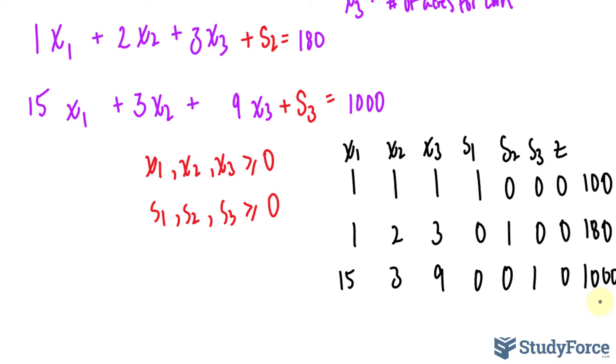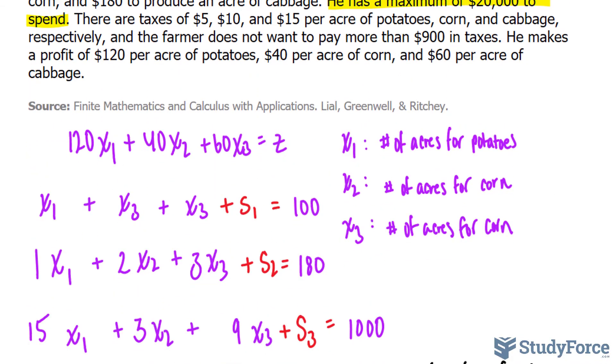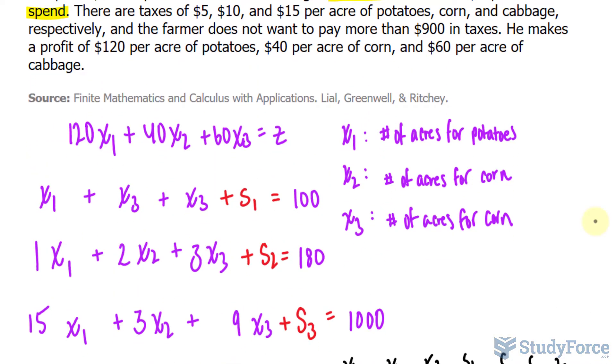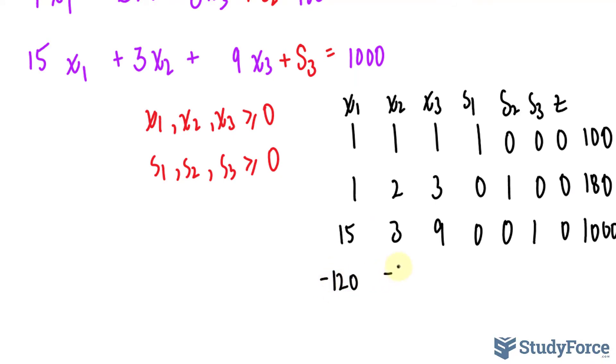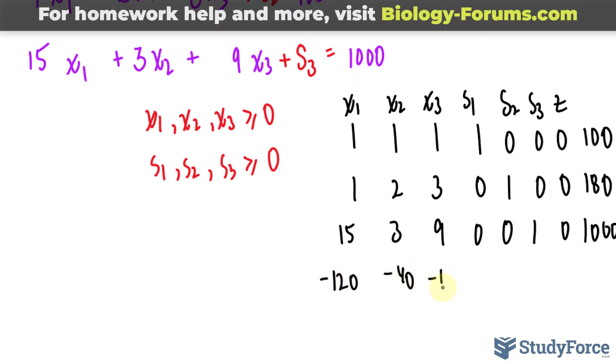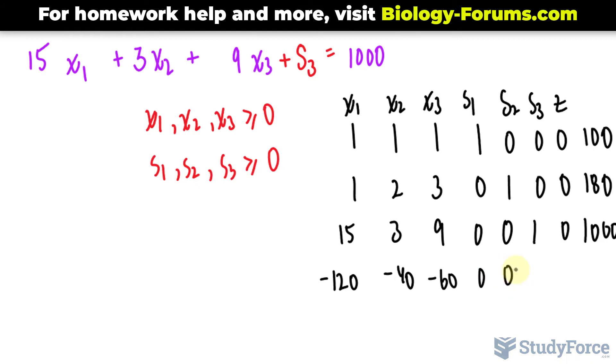And your objective function always goes last, 120, 40, 60, these three terms need to be on the same side as z. And by doing that, they all become negative. So rather than reporting the positive version, we'll write down negative 120, negative 40, negative 60, no slacks, and the z is 1 with no constant.